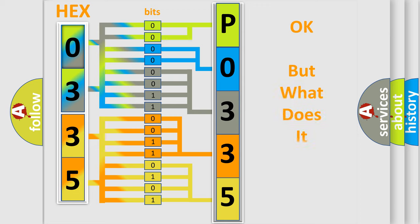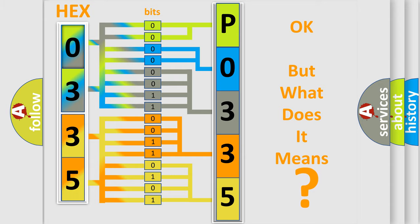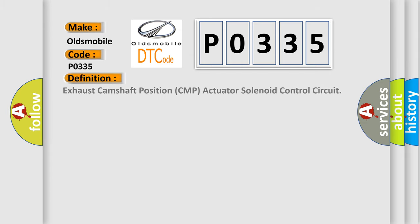The number itself does not make sense to us if we cannot assign information about what it actually expresses. So, what does the Diagnostic Trouble Code P0335 interpret specifically for Oldsmobile car manufacturers? The basic definition is: Exhaust camshaft position CMP actuator solenoid control circuit.